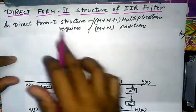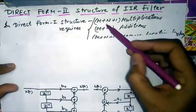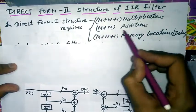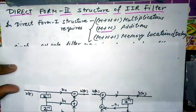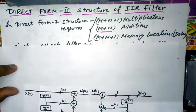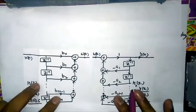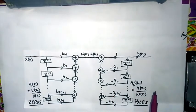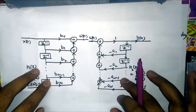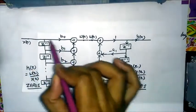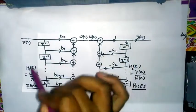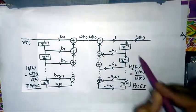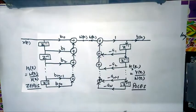In Direct Form 1 structure, we have M plus N plus 1 multiplications, M plus N additions, and M plus N plus 1 memory locations, that is delays. In Direct Form 1, first we implement zeros and then we implement poles, using an intermediate function.